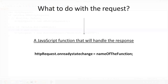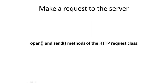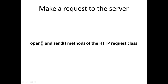With that done, we will use a JavaScript function to work on the response that we will receive. But first, we will have to set a reference to the ReadyStateChanged property of our XMLHTTPRequest object. The reference should be the name of the JavaScript function that needs to run when the state of the request changes. In order to make a request to the server, we will use the Open and Send methods of the HTTPRequest class.